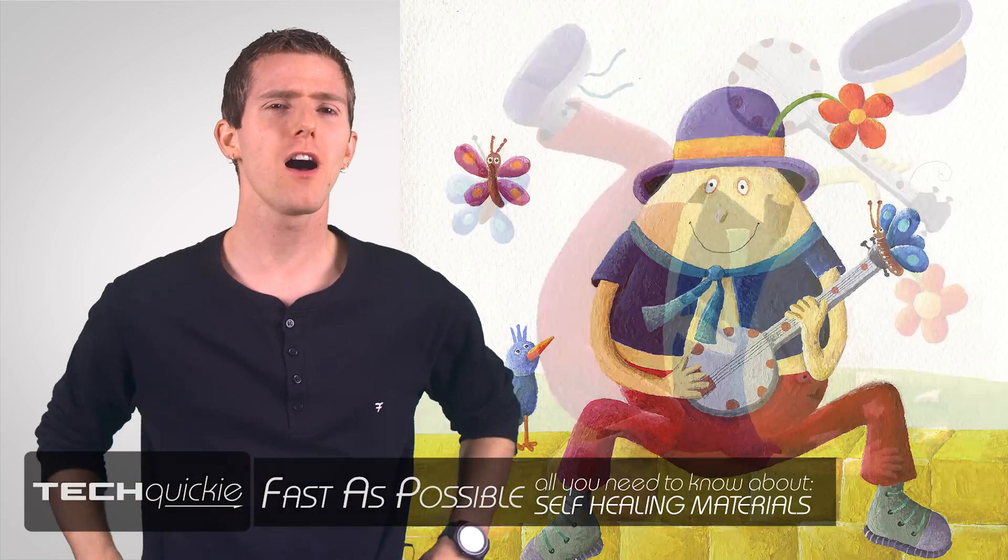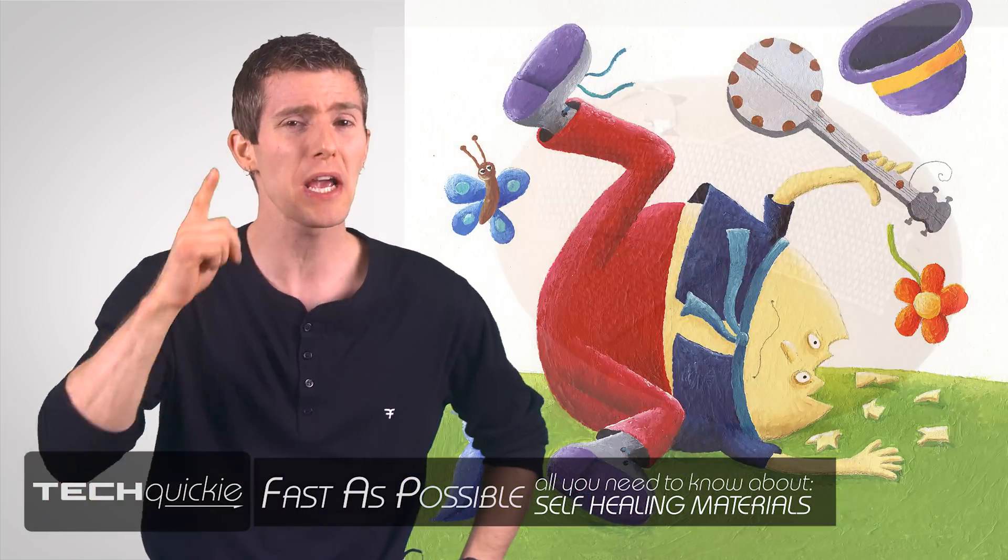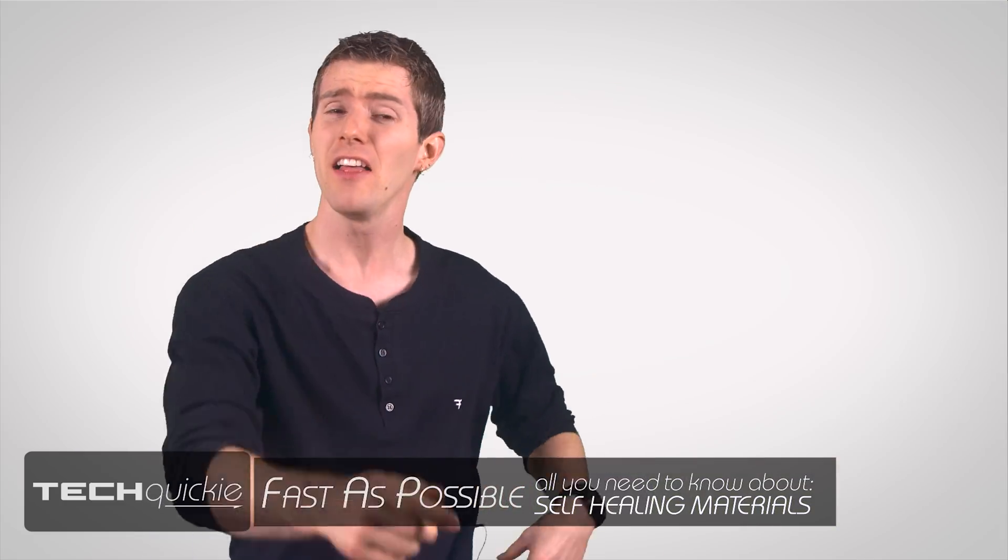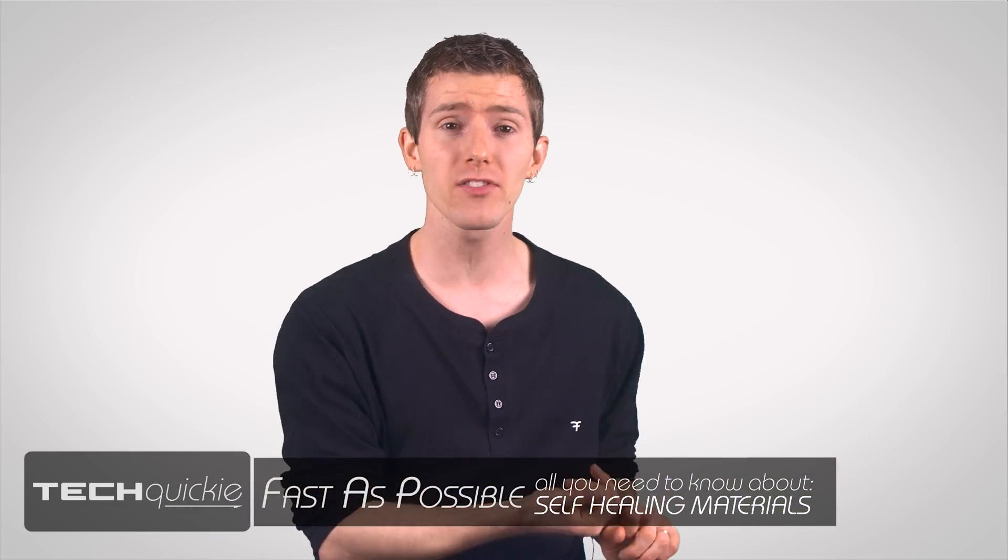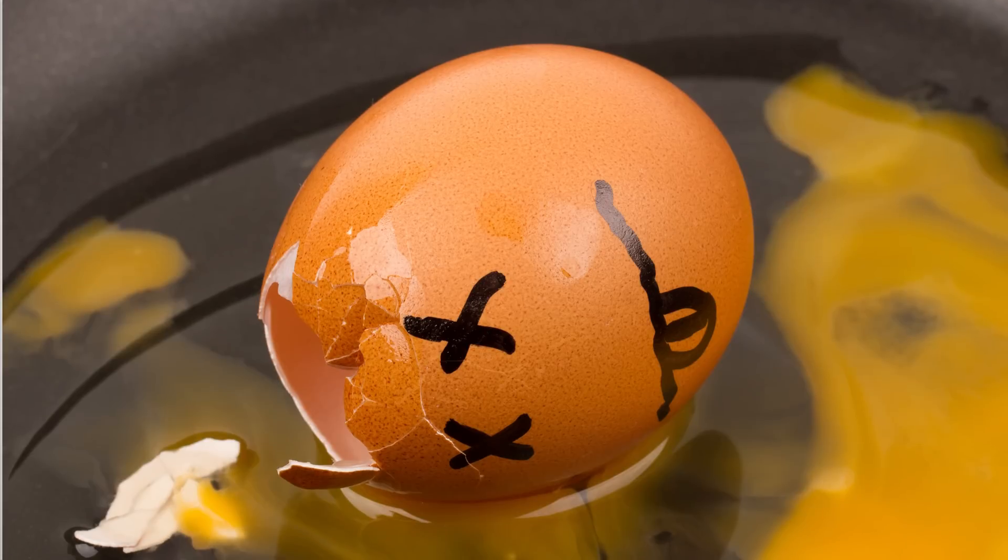Ever since Humpty the egg first fell off his wall, people have been dreaming up ways to put him together again. This led to the invention of adhesives such as tapes, glues, and a wide range of specialized polymers. None of which did very much for our friend at the base of the wall.